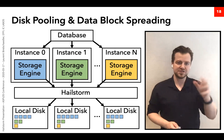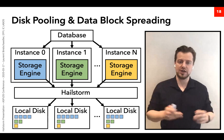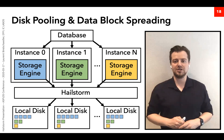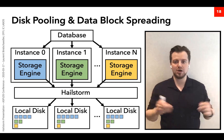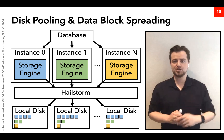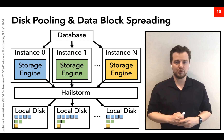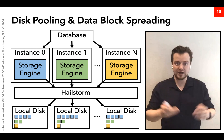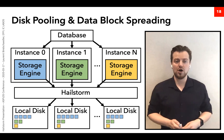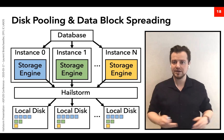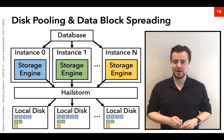Here is an overview of what this looks like in practice. Hailstorm pools all disks within the rack and spreads data blocks around. Each storage engine has a specific color, and its associated blocks — meaning its associated files — are stored on the local disks. Everything is well spread and the system achieves high load balance.